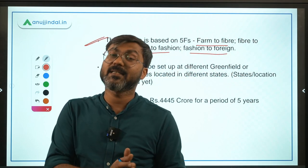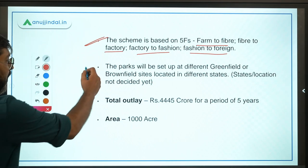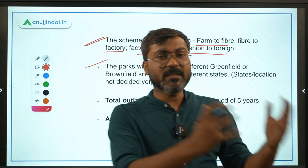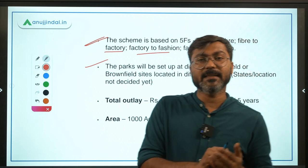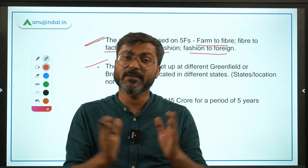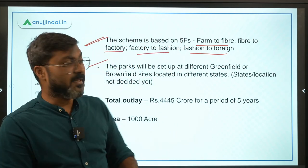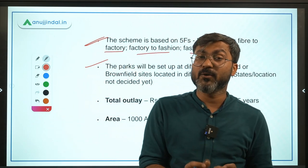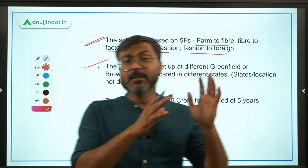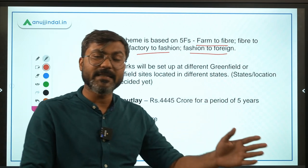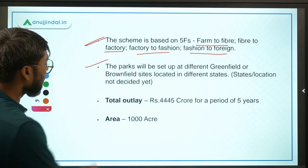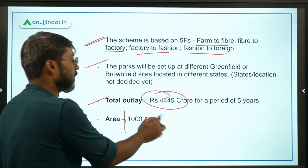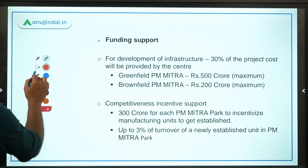A question may come asking which is not one of the five F's on which the PM MITRA scheme is based. The parks will be established at greenfield sites and brownfield sites. Greenfield projects are brand new projects starting from scratch, while brownfield projects are those already existing that need some support. Total outlay is 4,445 crores for a period of five years, and one park will be established in an area of around one thousand acres.